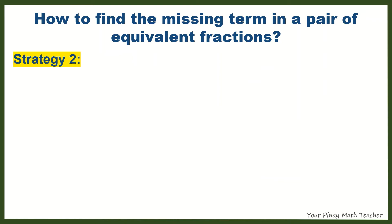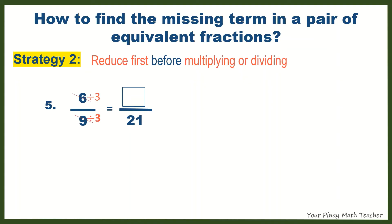Strategy 2: Reduce first the given fraction to its lowest term before multiplying or dividing. This strategy is useful especially if the given fraction can still be reduced and if both numerator and denominator cannot be multiplied or divided by the same number to get the missing term. For example, 6/9 equals blank over 21. You cannot multiply any number by 9 to get 21, and 6/9 can still be reduced.